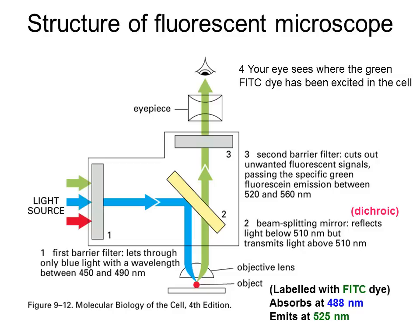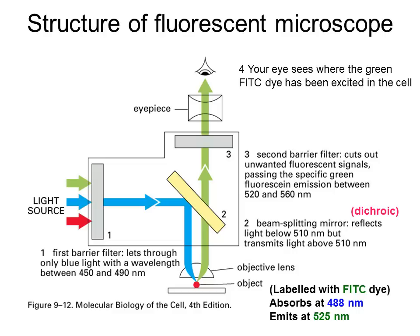The emitted fluorescent light at 525 nm passes back through the objective lens, which directs it to the dichroic mirror. Since this new light is of wavelengths greater than 510 nm, it passes through the mirror. That light then reaches a second barrier filter, which cuts out unwanted fluorescent signals and only allows light between 520 and 560 nm to pass. That passes through the eyepiece — providing a second level of magnification — and the green light eventually reaches the eye or the camera detector.